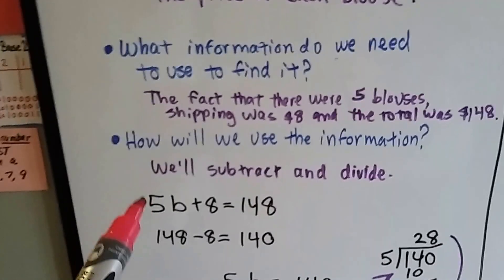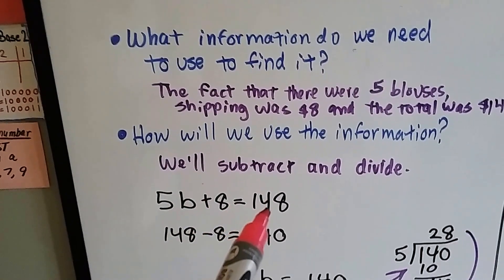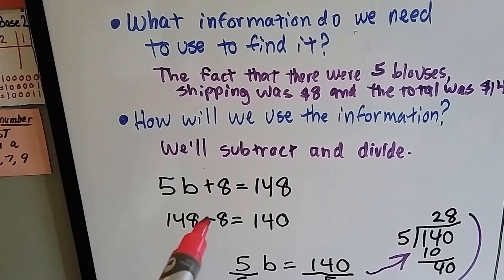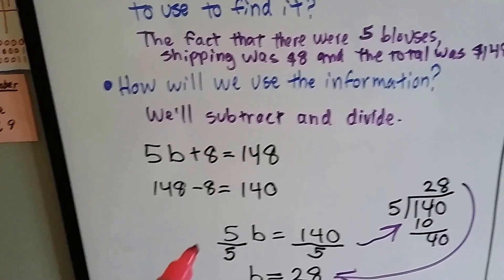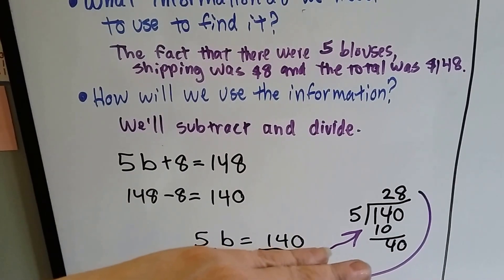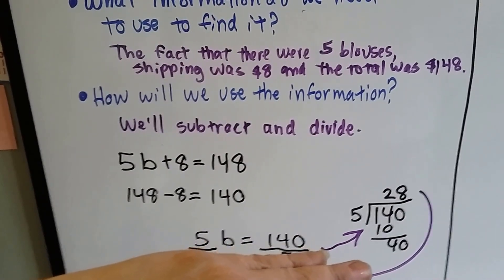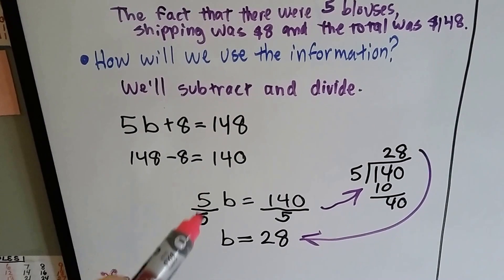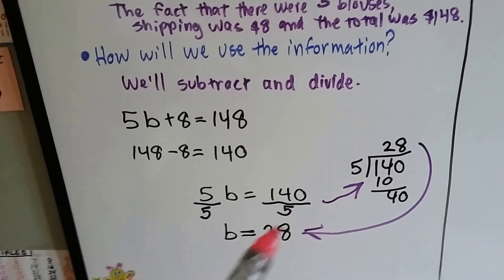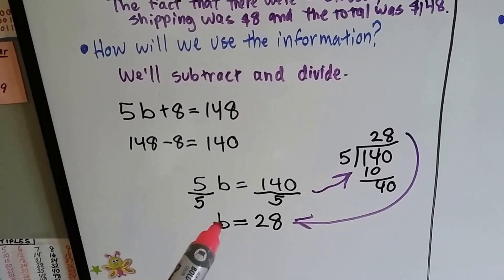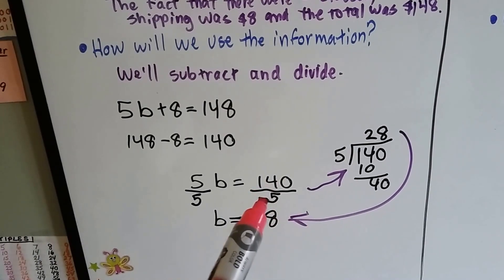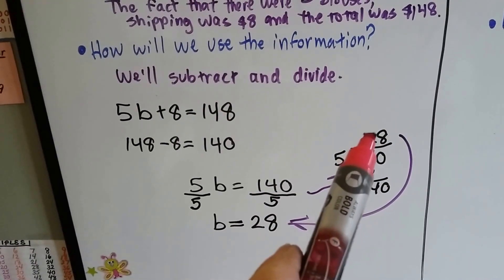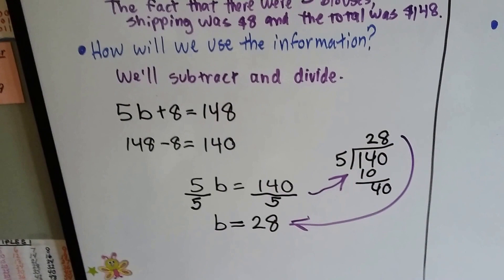We're going to work backwards. So if 5 blouses plus $8 in shipping equals $148, and this is a plus 8, we're going to subtract the 8. 148 minus 8 is 140. Now we've got 5B equals 140. What we're going to do is we're going to divide each side by 5 to isolate the B and get it all by itself. We divide 5 by 5 and 140 by 5. 5 divided by 5 is 1, so we get a B, just one B. And then 140 divided by 5, because that's what fractions are, they're just little division problems, right? 140 divided by 5 is 28, and we find out that each blouse was $28.